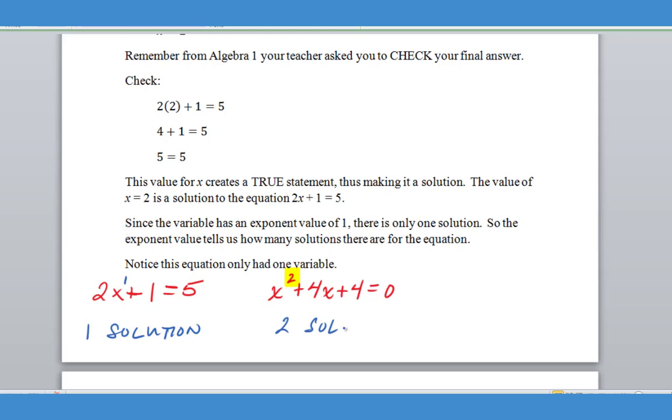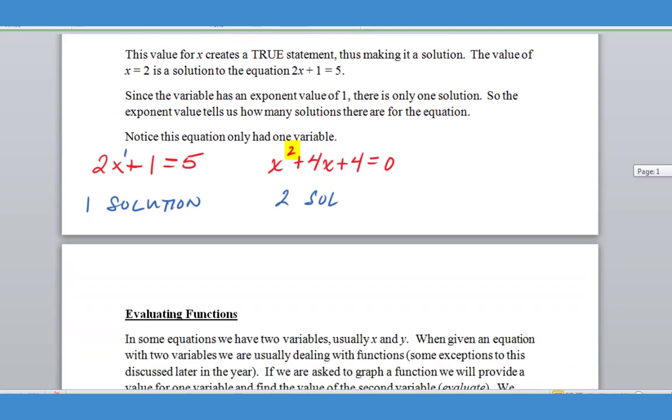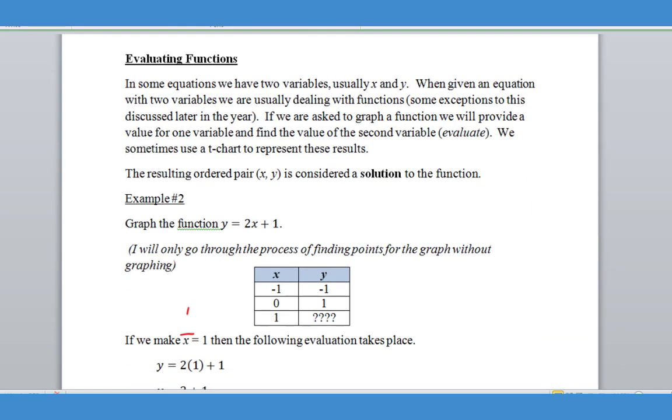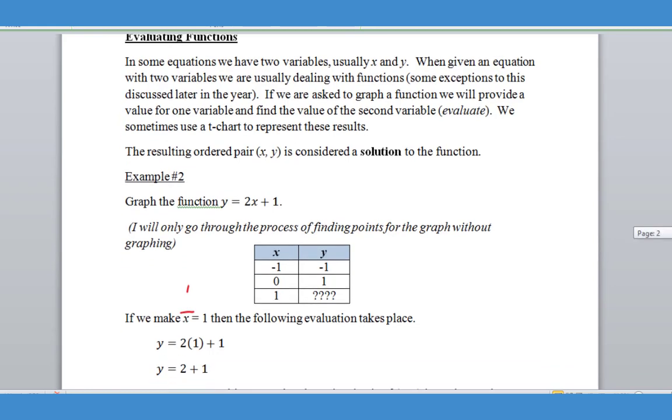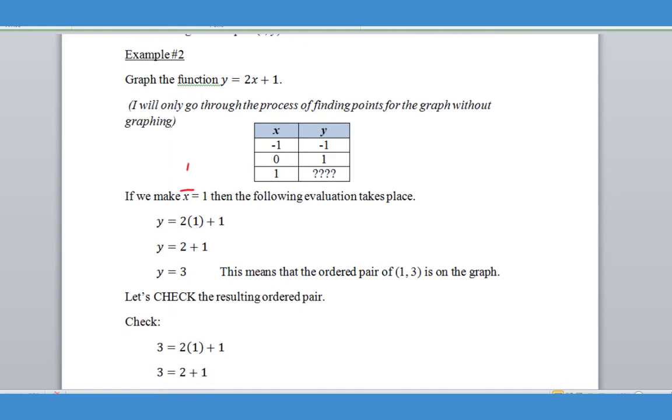So good introduction there. Now let's move down and let's talk about evaluating a little bit. Now as we've moved into functions and linear functions in general, we are now graphing linear functions, which means that we're having to come up with ordered pairs for the graph. These ordered pairs are actually considered solutions to the function. And so if we gave you an example, like example number two, to graph the function Y equals 2X plus 1, we would probably use a T chart to help us come up with our ordered pairs.